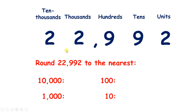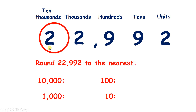Now we have 22,992. Rounding to the nearest 10,000, we find our place, look next door, and it's 4 or less, so we let our 10,000s column rest and put zeros to the right of it — so we have 20,000.